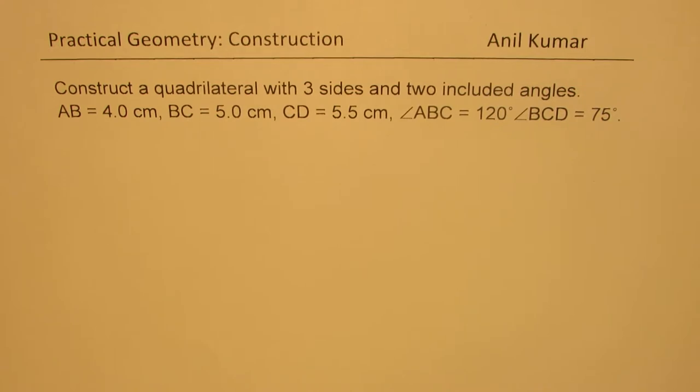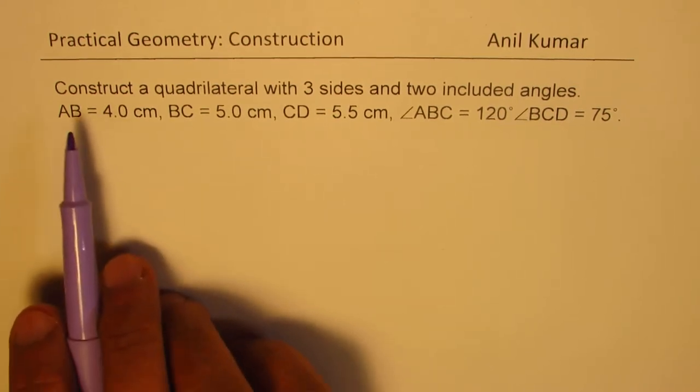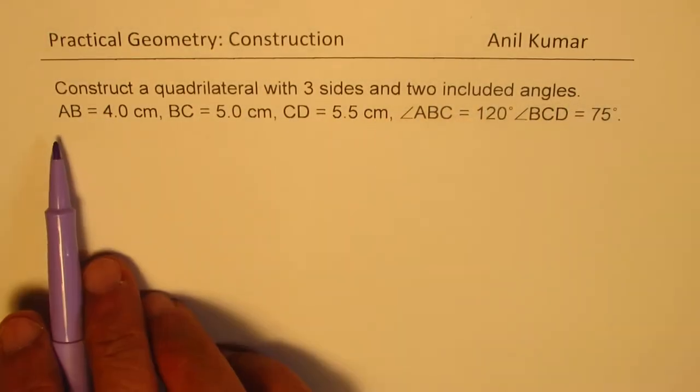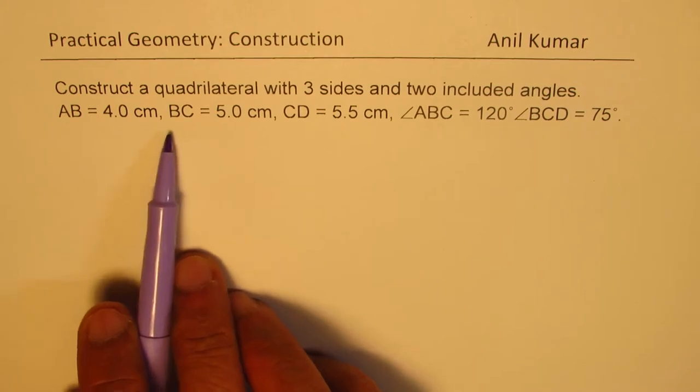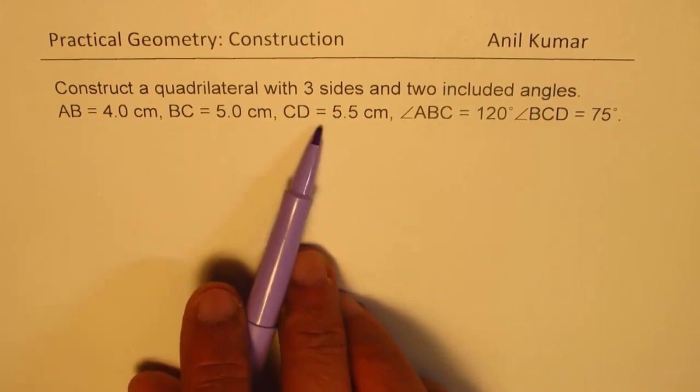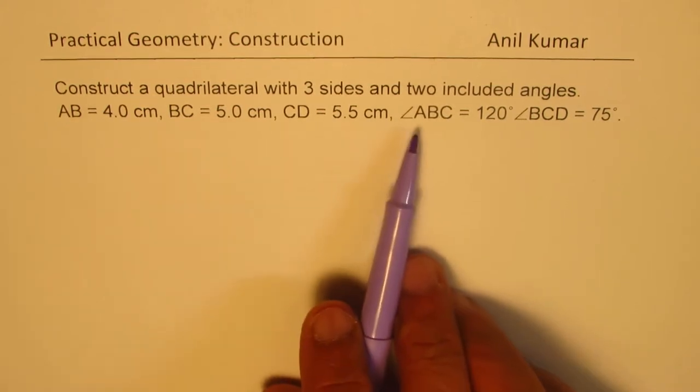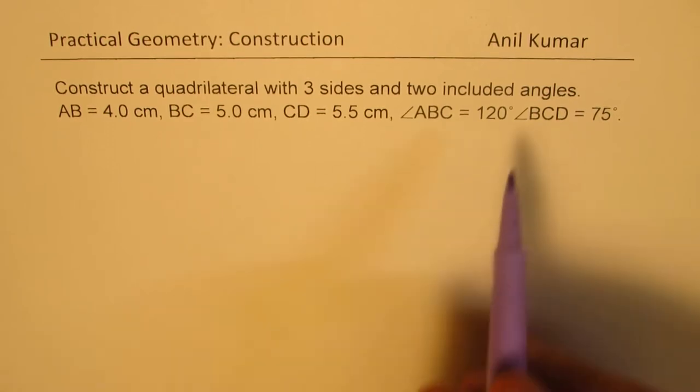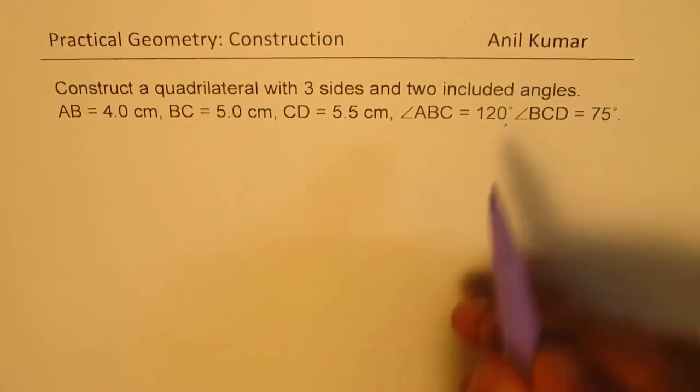We will be constructing a quadrilateral with three given sides and two included angles. Construct a quadrilateral with AB = 4 cm, BC = 5 cm, CD = 5.5 cm. The angles are angle ABC equals 120 degrees, angle BCD equals 75 degrees.